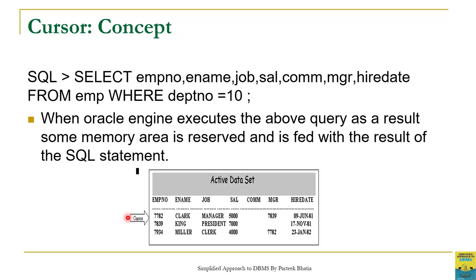For example, let us consider this SELECT statement. Here we are selecting some columns from the table employee where department number is 10. The result of this query will be stored in an internal area of memory, and that internal area of memory is called a cursor. So this active data set is actually a cursor area which stores all the columns and rows returned by this query.